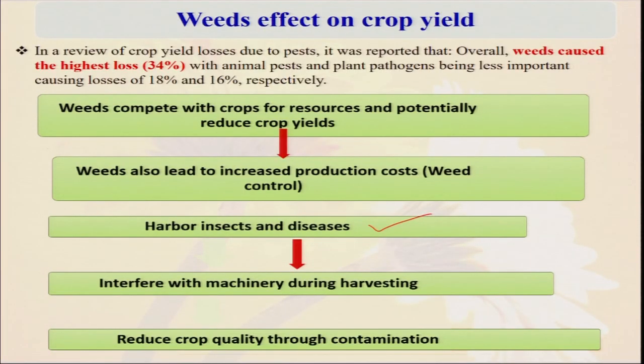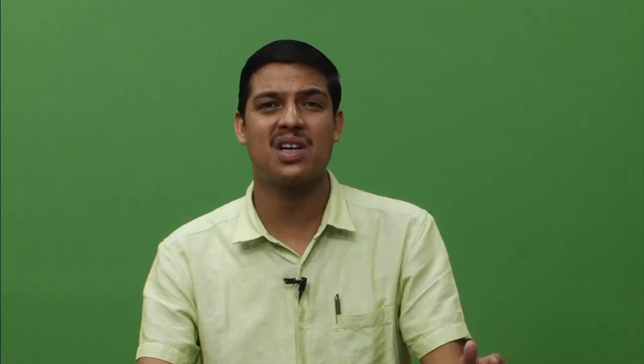Weeds also interfere with the harvest and reduce quality. In various years ago there was a seed of Argemone mexicana. They are very small seeds and these seeds look like mustard. What happened? If you have not taken care, the seeds of Argemone mexicana get mixed with the mustard. When you crush those seeds along with the mustard oil, there is some toxicity effect due to Argemone mexicana. This Argemone mexicana is used to cause dropsy disease in humans. So when there are too many objectionable weeds and we cannot separate the seeds because they look the same, they reduce the quality of our produce. So weeds are reducing the quantity of yield, enhancing the cost of cultivation, and also reducing the quality of the produce.